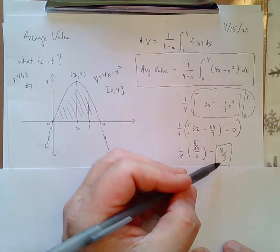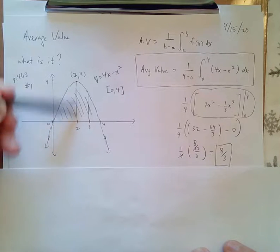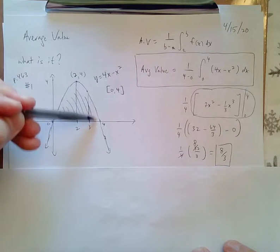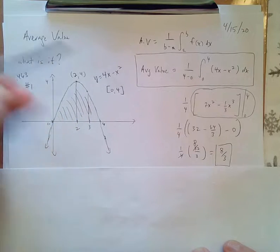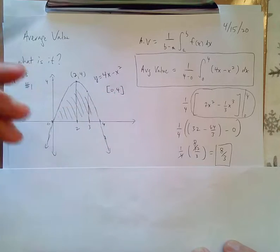What 8 thirds is, is the average of all of these heights inside the rectangle. There's an infinite amount of heights in this region. The average height is 8 thirds. So that's a pretty straightforward question. I probably should have done this first.